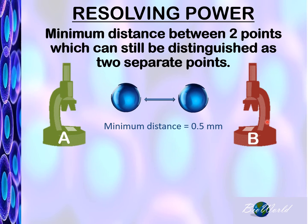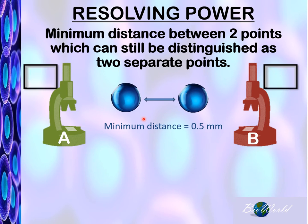Now when viewing an object with a minimum distance of 0.5 millimeters, let's say this is the image that was obtained. We can see that both Microscope A and Microscope B gave clear images.